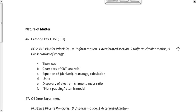All right, last unit, last review session of this format, at least — the nature of matter. You'll remember it hasn't been that long since we started that unit. We started off with analysis of the cathode ray tube. The cathode ray tube experiment was performed by J.J. Thomson in 1897, and really what it boiled down to is a device that was used by Thomson to discover the electron.